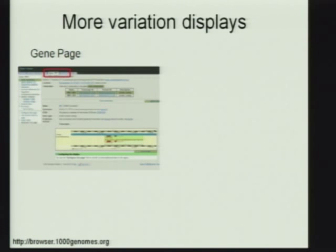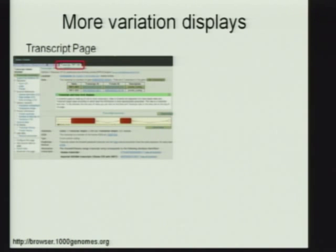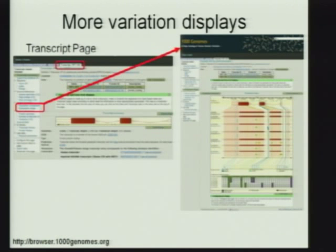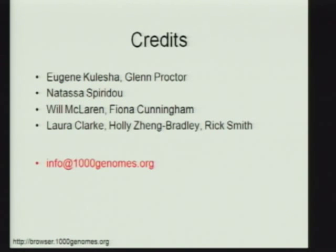There's a whole host of other variation displays where variation is incorporated into different things. If you're on the gene page, you have an area on the side where you can get to variation information — this actually shows you variation information in the context of protein domains, so how protein domains are affected by the variation sequences. On the transcript page we have a couple of different displays showing how the trio information affects the transcripts — these are each of the six trios — and all the synonymous and non-synonymous variants in the transcript. With that, I just want to acknowledge a few people at the EBI who built the back-end databases and created this Ensembl-based browser for the 1,000 Genomes.